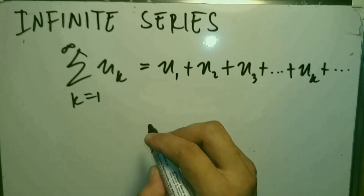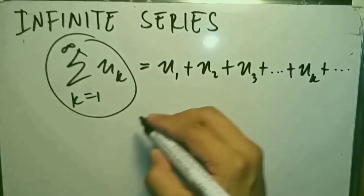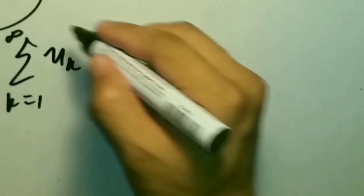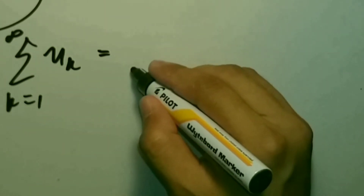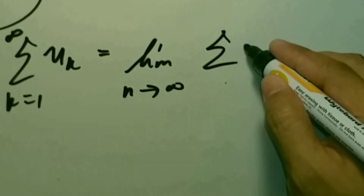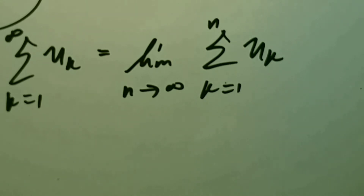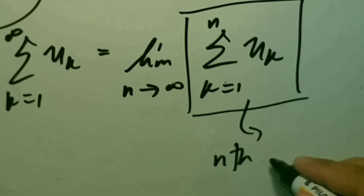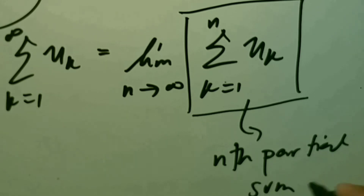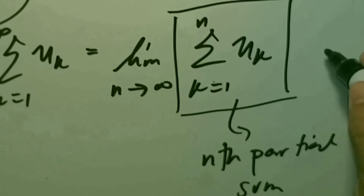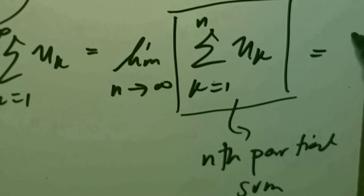To evaluate this series, the summation of u_k from k=1 to infinity can be written as the limit as n approaches infinity of the summation of u_k from k=1 to n. First we get the partial sum of the series — the n-th partial sum — and then if we take n approaching infinity, that gives you the sum of the series, written as S.